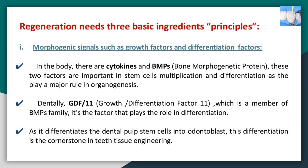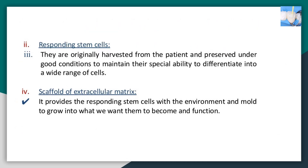Dentally, GDF-11 — growth/differentiation factor 11, a member of the BMP family — is the factor that plays a role in differentiation. It differentiates dental pulp stem cells into odontoblasts, and this differentiation is the cornerstone in teeth tissue engineering. The second ingredient: responding stem cells, originally harvested from the patient and preserved under good conditions to maintain their ability to differentiate into a wide range of cells.